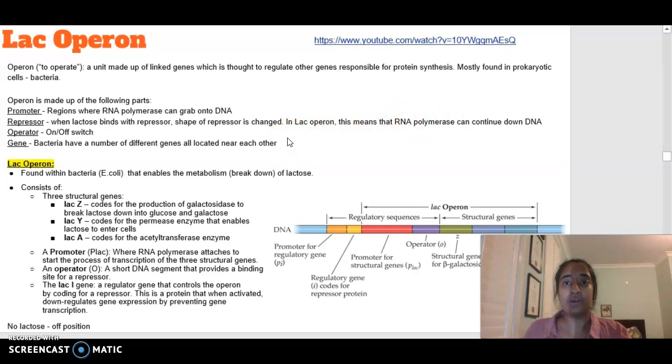In terms of the action of repressors and activators, repressors basically bind to silencers. If a repressor binds to a silencer, it's going to decrease the rate of transcription. But if an activator binds to an enhancer, that's going to increase the rate of transcription. Your operator is your on and off switch and your gene is basically the DNA sequences that are coding particular things. Bacteria have a number of different genes that are all located near each other.